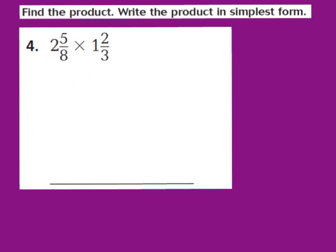Now let's take a look at question number 4. Our job is to find the product in simplest form. For question 4, they give me 2 and 5 eighths times 1 and 2 thirds. My first step is to rewrite the mixed numbers as improper fractions. I multiply my denominator 8 times the whole number 2: 8 times 2 is 16. Then I add the numerator 5, giving me 21. So the numerator is 21, and the denominator stays the same — it becomes 21 eighths.